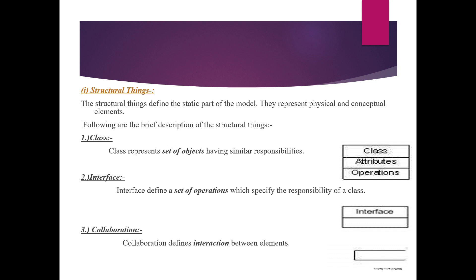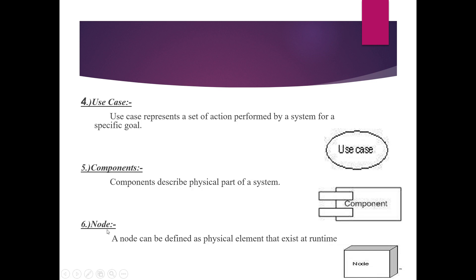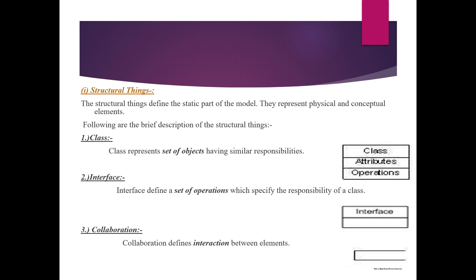The types of structural things are: class, interface, collaboration, use case, components, and node. A class represents a set of objects having similar responsibilities. A class contains attributes and the operations that are to be performed on those attributes. This class structure is represented by a specific diagram in UML.